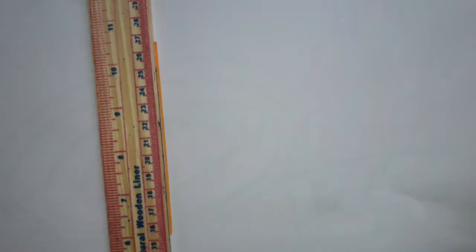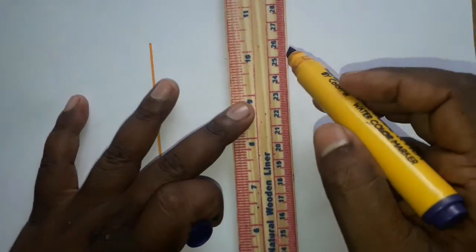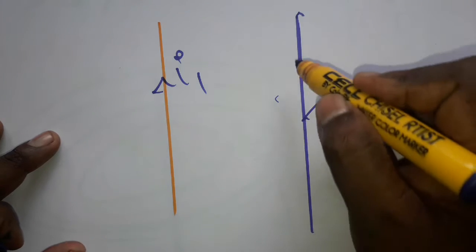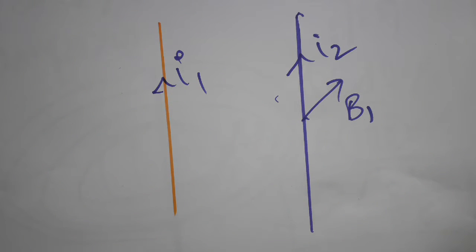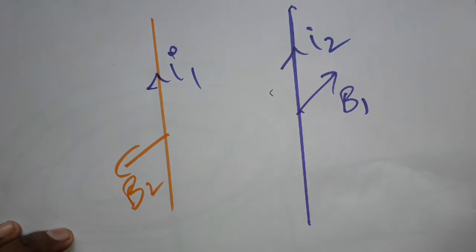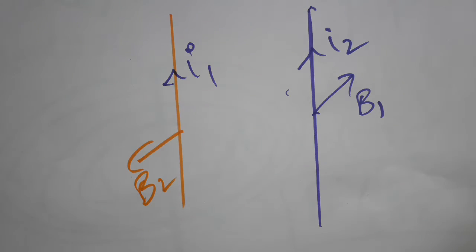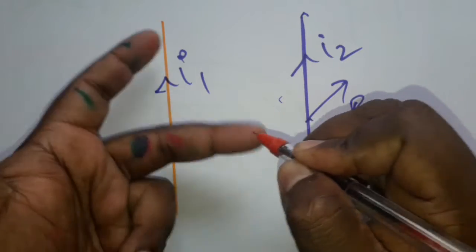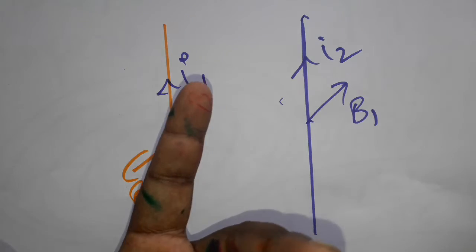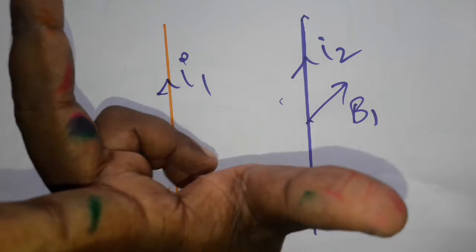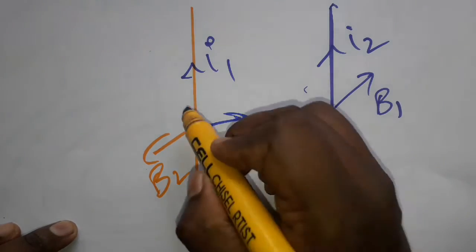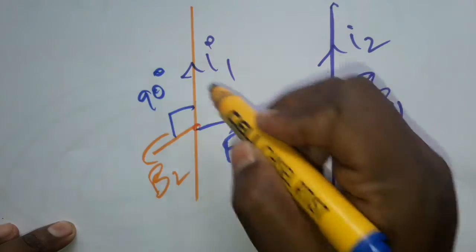Now, what is the force created between the two wires? Using Fleming's left-hand rule: for wire one, I1 is upwards, B is outwards, so the force F1 is created towards wire two. The angle between B and I is 90 degrees. Similarly, for wire two, applying the left-hand rule, force F2 is also created towards wire one.